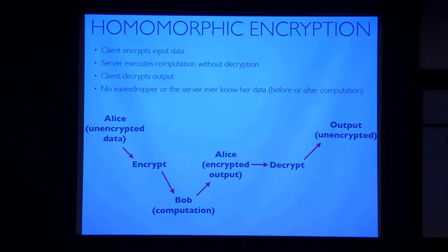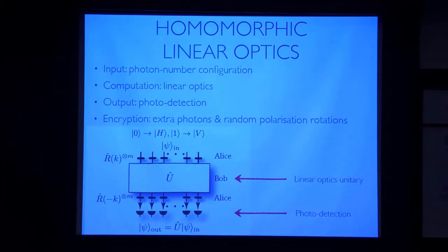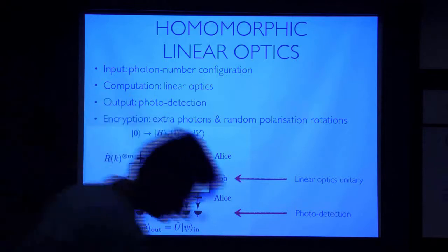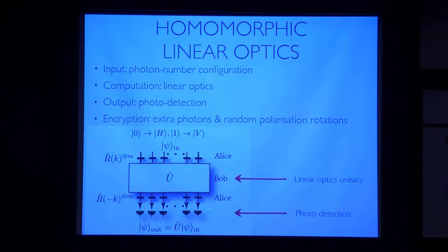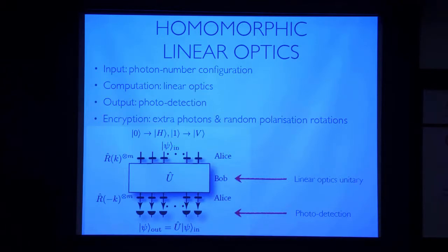We've got a way for Alice to process her data without anybody being able to read it, even the server in between. Here's a way of doing this in linear optics. Imagine a really simple linear optics quantum computer. We encode our input state into single photon and vacuum states. This is just a linear optics network — beam splitters and phase shifters — and at the end we do photo detection. It's a really simple model for an optical computation.